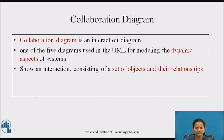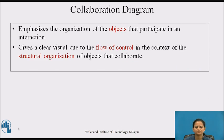A collaboration diagram shows an interaction consisting of a set of objects and their relationships. It emphasizes the organization of the objects that participate in an interaction, and also gives a clear visual cue to the flow of control in the context of the structural organization of objects that collaborate.